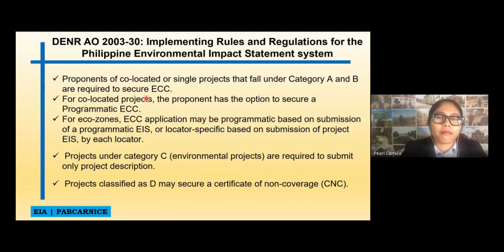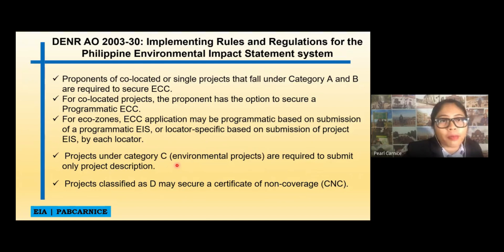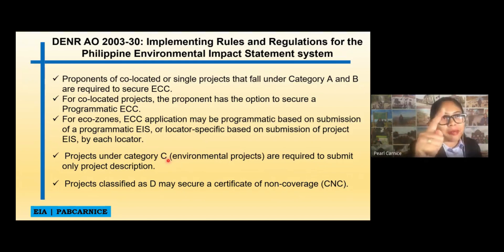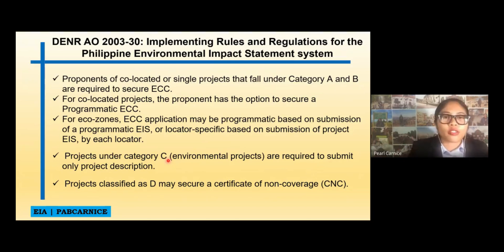For Category A and B, you have to secure an ECC. For co-located projects, you also have to secure an ECC. For ecozone projects, you also have to secure an ECC. For projects under Category C, proponents are required to submit only a project description. And for Category D, you may secure a Certificate of Non-Coverage or CNC. CNC does not mean certificate of non-compliance but certificate of non-coverage. It means that your project is not under Category A, B, and C, and would not cause an adverse impact to the environment.